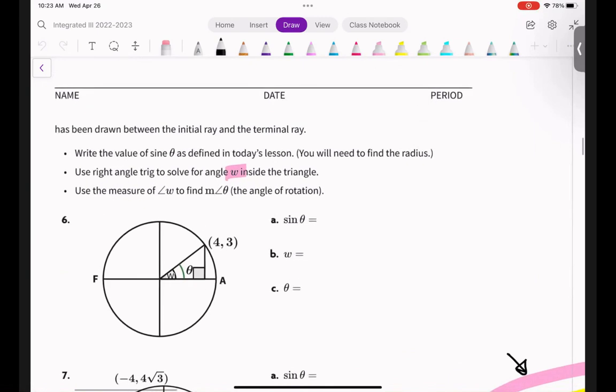Write the value of theta as defined in today's lesson. You will need to find the radius. Use the right triangle to solve for angle W inside the triangle. So in this case, theta and W are the same exact angle. And then use W to find, it's actually, how do you say that? I forget. Omega probably, to find theta. Okay. So in this case, theta and omega are exactly the same. So theta and W are exactly the same.